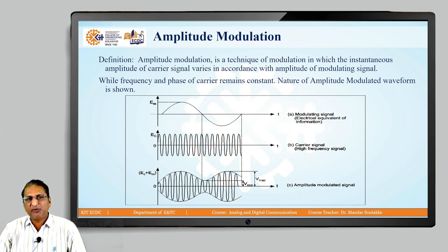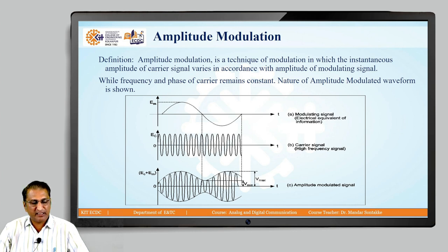The first waveform is a modulating signal, the second is the carrier signal, and the third is the amplitude modulated signal.